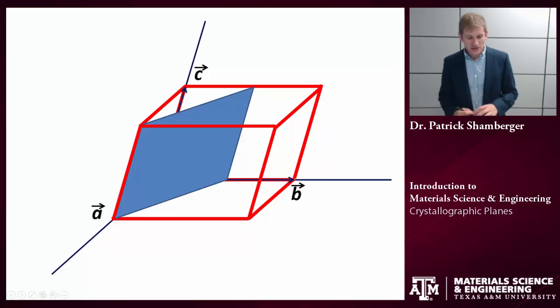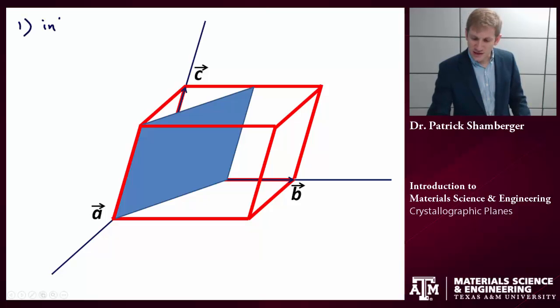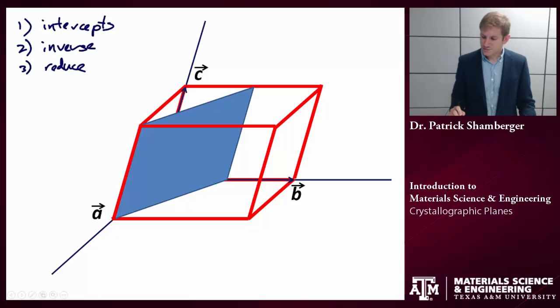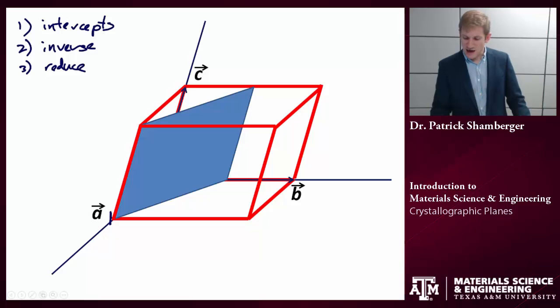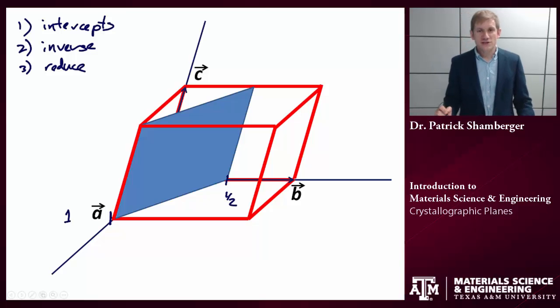Let's try a different case. And this is going to show us one tricky thing you might encounter. So again, my three steps: find the intercepts, find the inverse, and reduce the fractions. So what are the intercepts? It's intersecting A over here at one. It's intersecting B over here at one half. But it never intersects C. So this plane is parallel to the C axis.